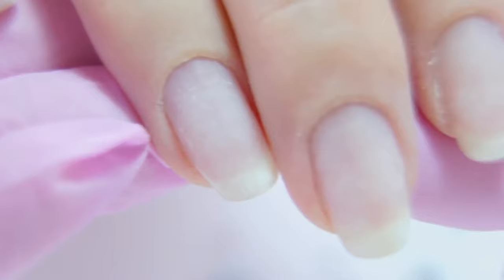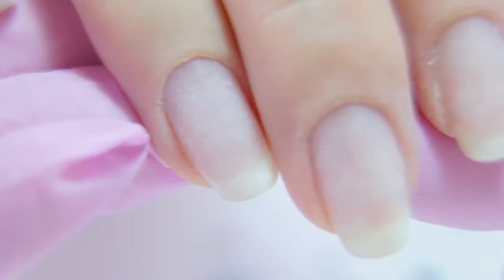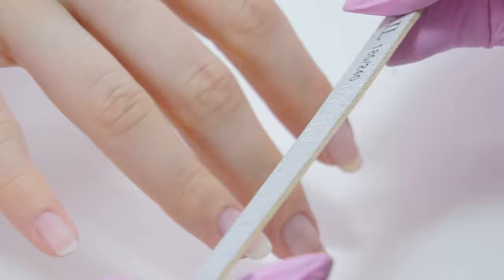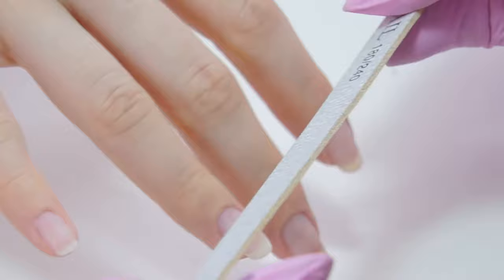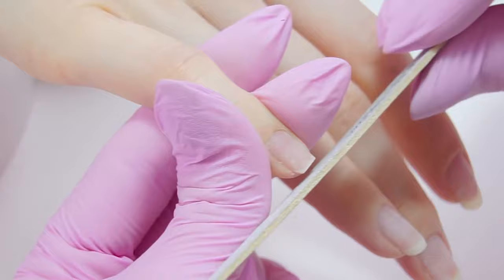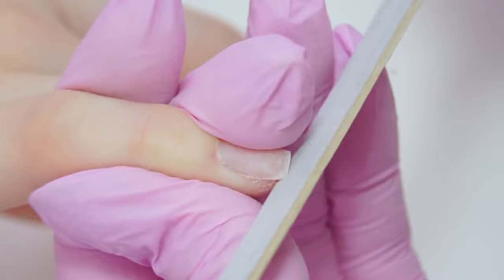We are done with the cuticle and now we need to shape up the free edge. For the shape, we have chosen a soft square. So I need to file straight on the edge and I'm filing the bottom part getting under the nail.